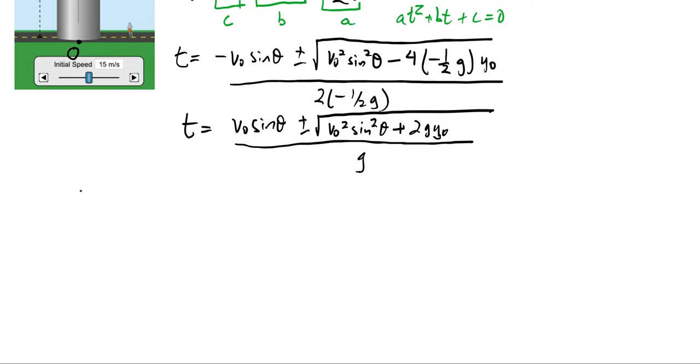Now, we just go ahead and substitute in some numbers. So we could say that t is equal to v-naught, that's 15 meters per second, times sine theta, so that's sine of 30 degrees, plus or minus the square root of 15 meters per second squared, quantity squared, sine squared of 30 degrees.